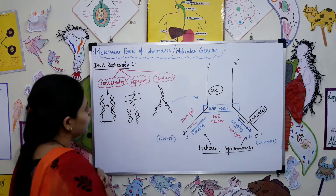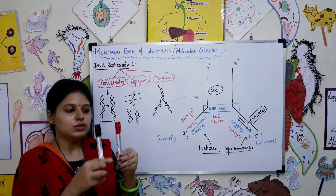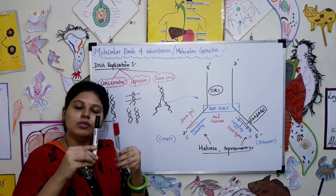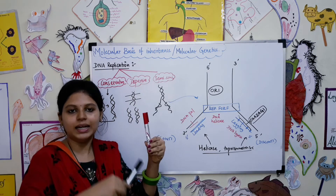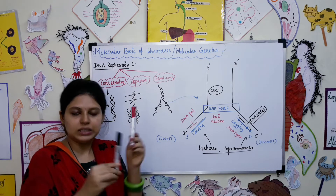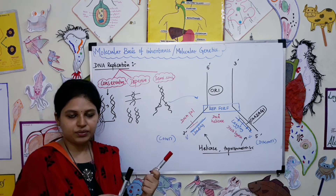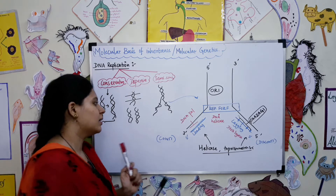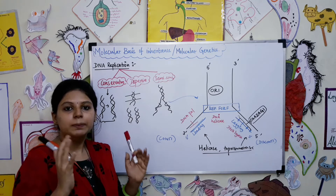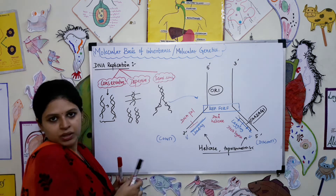Next is semi-conservative replication. In semi-conservative replication, there are two strands of DNA. Each strand will unwind and each will form a complementary strand. For example, if base A is there, it has to combine with T; if G is there, it has to combine with C. That is semi-conservative replication, and the enzymes involved in this process are what we are going to study today.